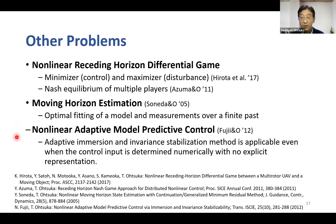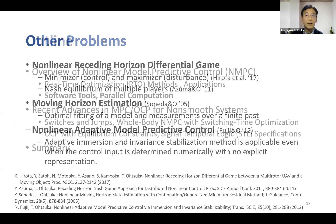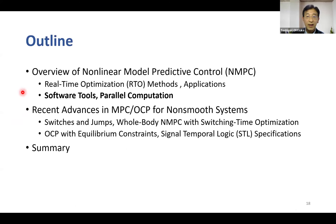The real-time optimization algorithm for MPC can also be applied to other problems such as receding horizon differential games and moving horizon estimation, since the optimality conditions are almost the same as those in standard optimal control. Moreover, one of the adaptive control methods is applicable even when the control input is determined numerically without explicit representation, so it can be easily combined with NMPC. Now let me introduce some software tools and parallel computation methods for NMPC.